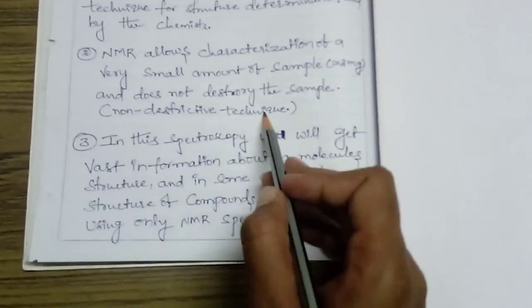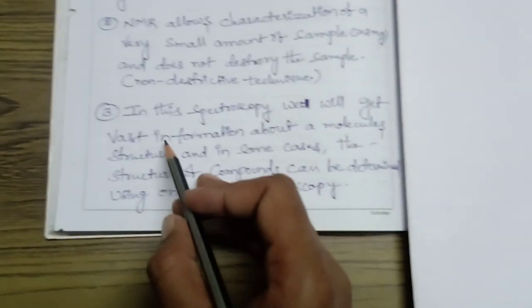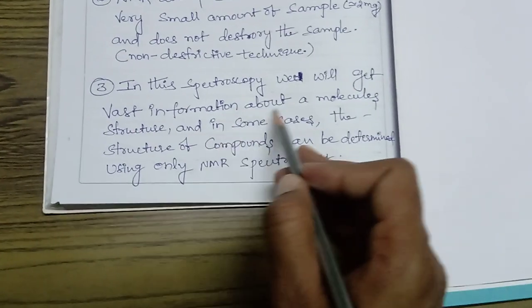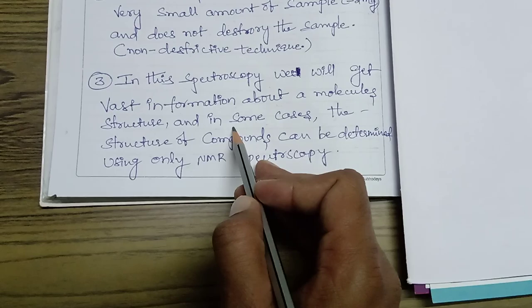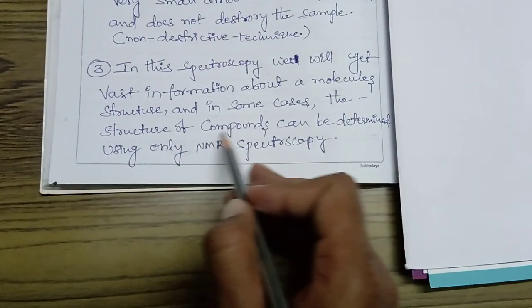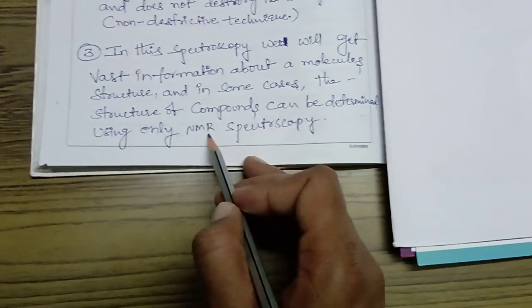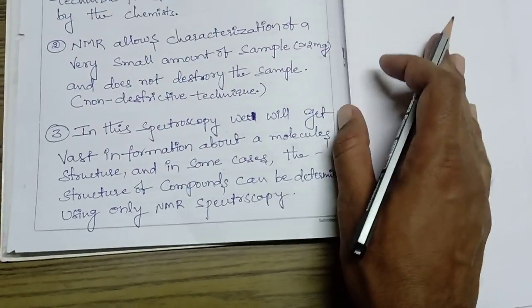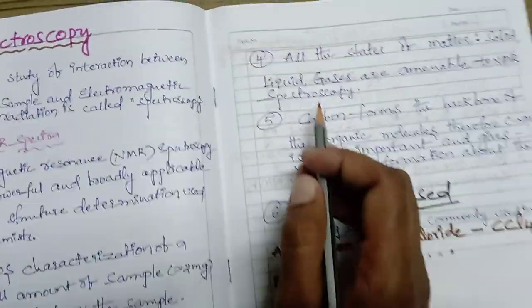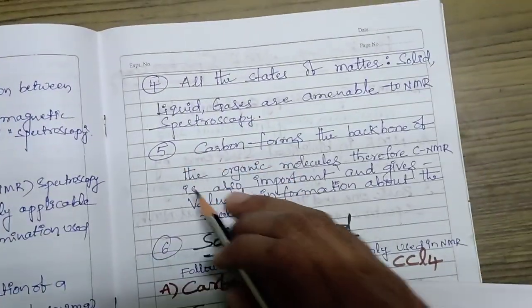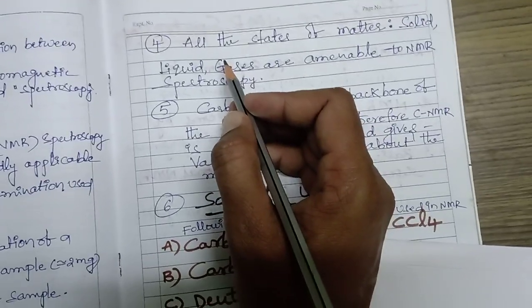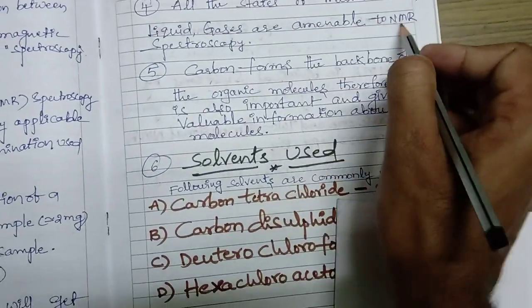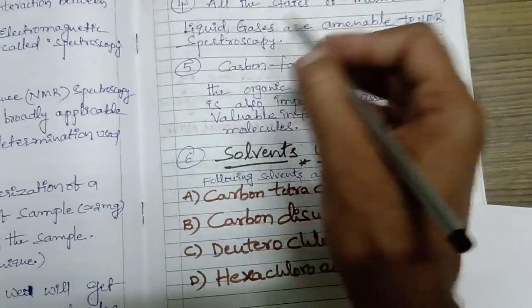This is a special feature of NMR spectroscopy. It is also called a non-destructive technique. Third point, in this spectroscopy we will get vast information about a molecule's structure, and in some cases the structure of compounds can be determined using only NMR spectroscopy. Fourth point, all states of matter like solid, liquid, and gases are amenable to NMR spectroscopy.